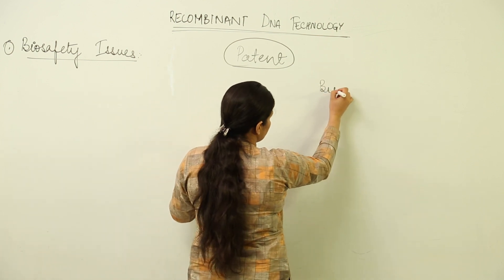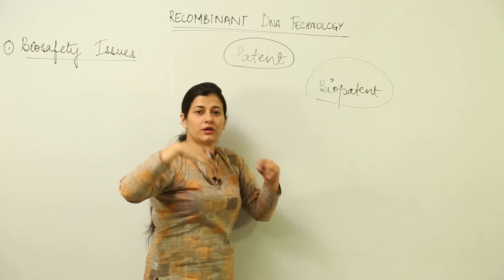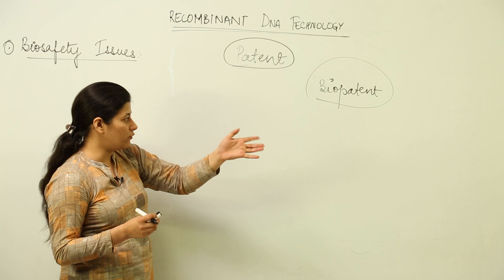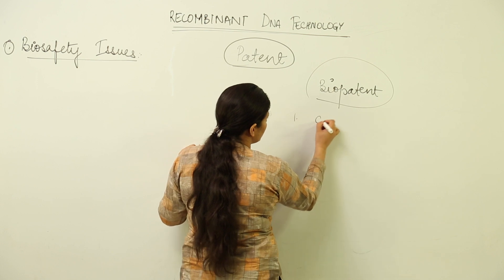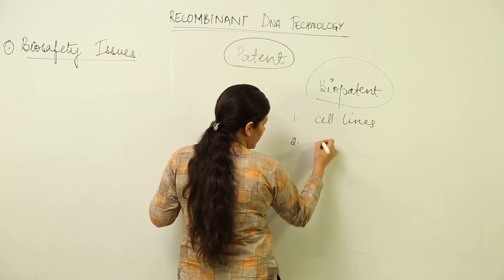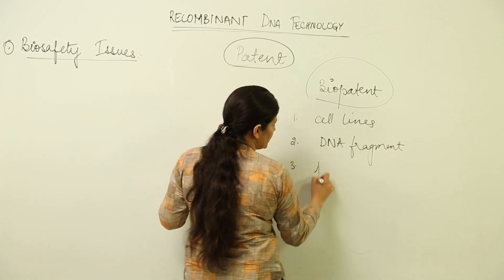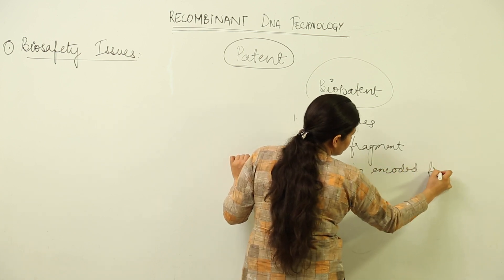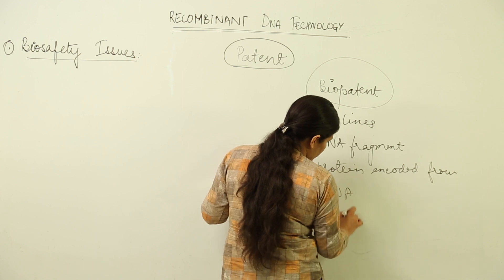Now we have to deal with biopatent. Biopatent is awarding permission to carry out whatever research is to be done in a particular field of a particular organism, if someone has pioneered in finding out that particular state. Things that could be covered under biopatent include cell lines, DNA fragments, and proteins encoded from DNA, as well as the germplasm of a particular variety.